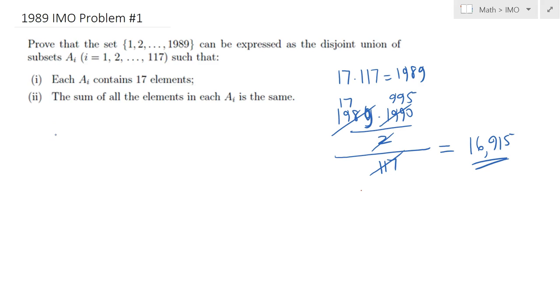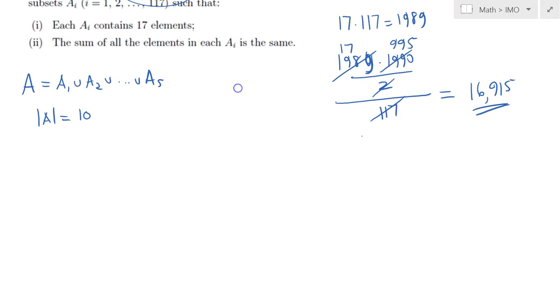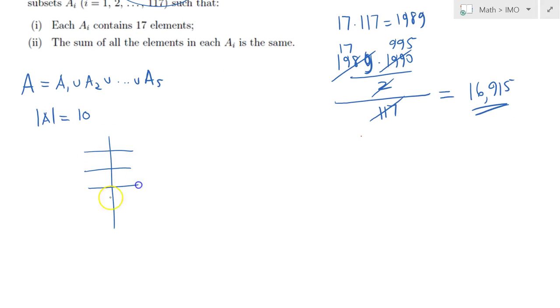So as a result, that would tell me the sum of elements in each set should be 16,915. The way the question is right now, it's very complicated because there are too many numbers around. So I will simplify this thing. So let's try to figure a way to handle all this with, let's say we have five subsets only. A1 union A2 union A5. And let's assume that the whole thing is A, the whole set. And let's start with a small a, let's assume that A has only say 10 elements in it. Then each of our subsets A sub i should have two elements in them.